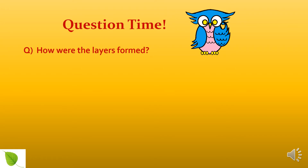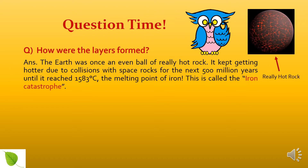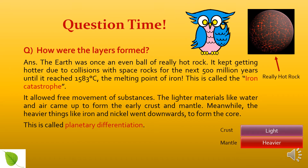How were the layers formed? The earth was once an even ball of really hot rock. It kept getting hotter due to collisions with space rocks for the next 500 million years until it reached 1,583 degrees Celsius — the melting point of iron. This is called the iron catastrophe. It allowed free movement of substances. The lighter materials like water and air came up to form the early crust and mantle, while the heavier things like iron and nickel went downwards to form the core. This is called planetary differentiation.